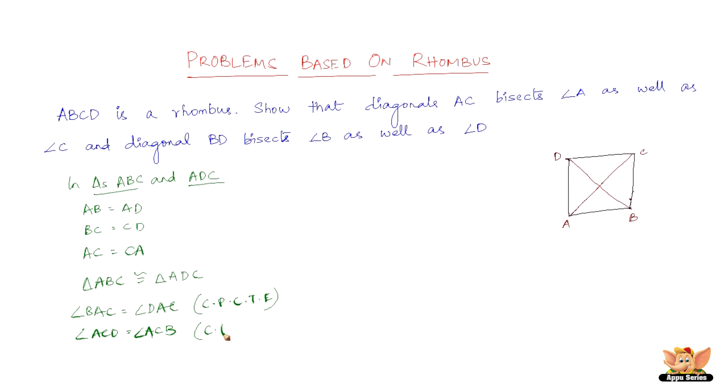So again the reason is same, corresponding parts of congruent triangles are equal. So therefore, AC bisects angle A as well as angle C.